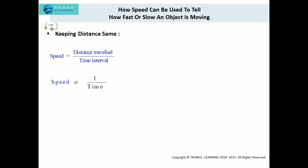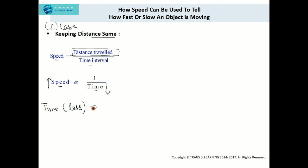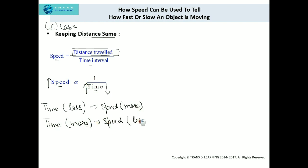First, we consider the case where distance is kept the same. When this parameter is constant, if we analyze speed and time there is an inverse relation between them. Inverse relation means that if the time interval is less, the speed of the body is more. And if the time interval is more, then the speed will be less.